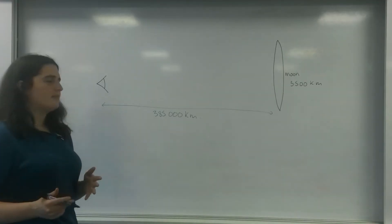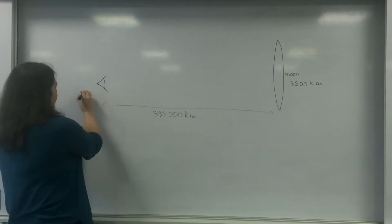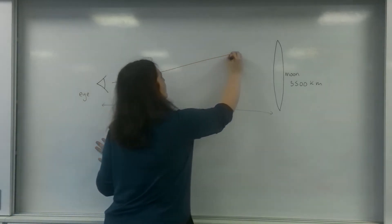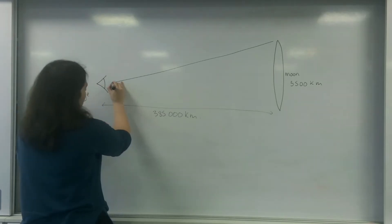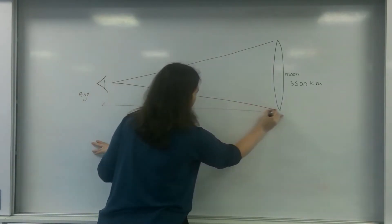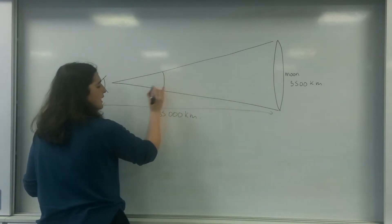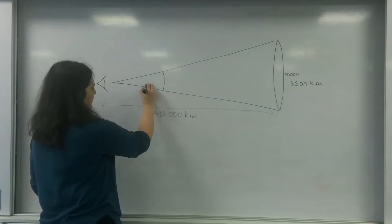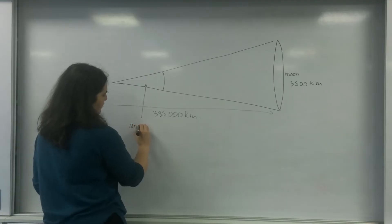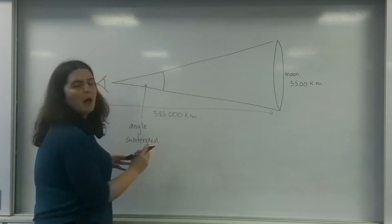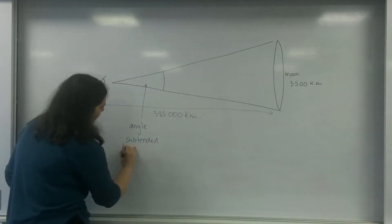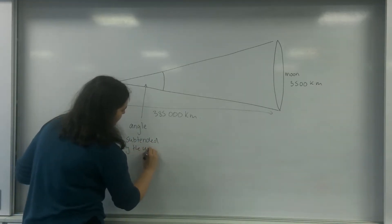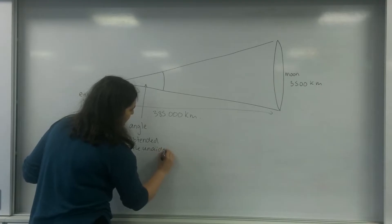What I mean by this is if I actually draw, this is my eye here, if I draw a line from here to here to the top of the moon and at the bottom of the moon, I will have an angle here. And this angle, this one here, this is the angle subtended, or made, by the unaided eye.